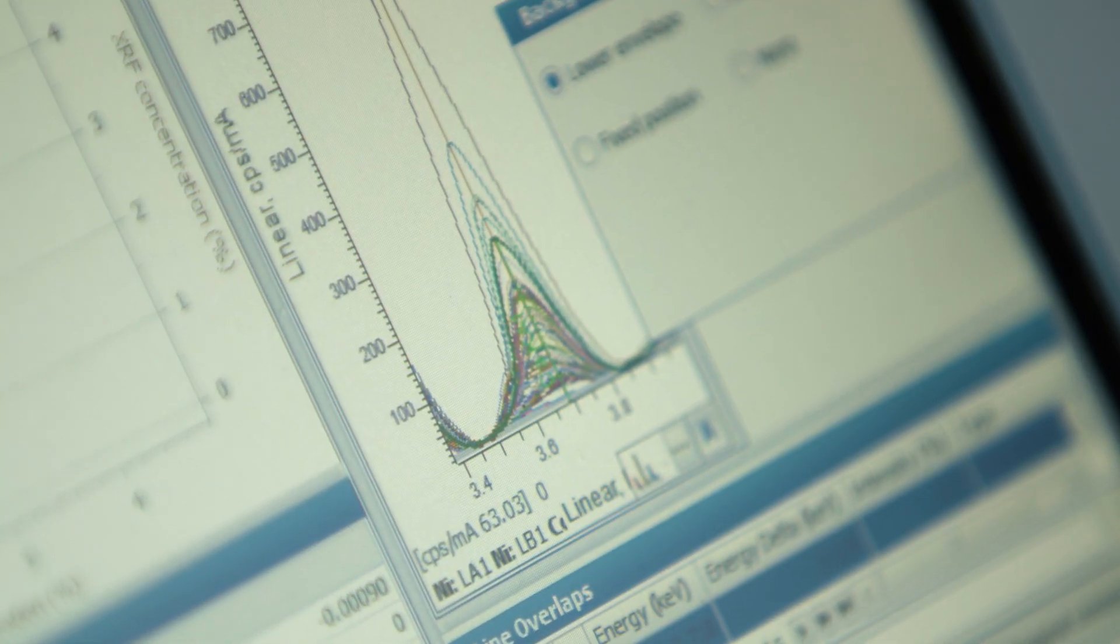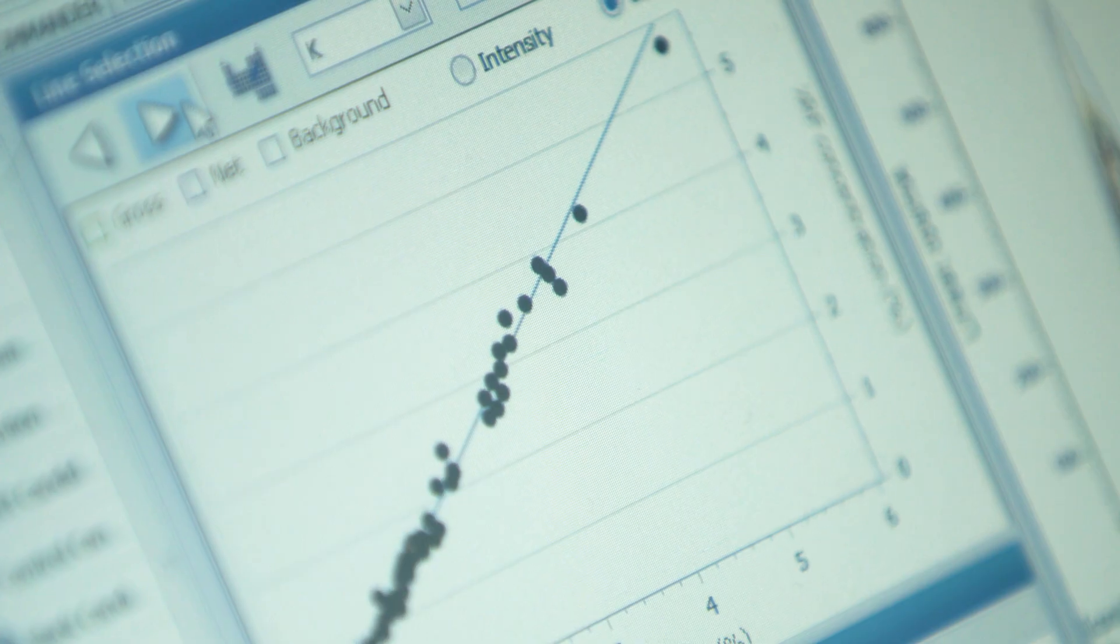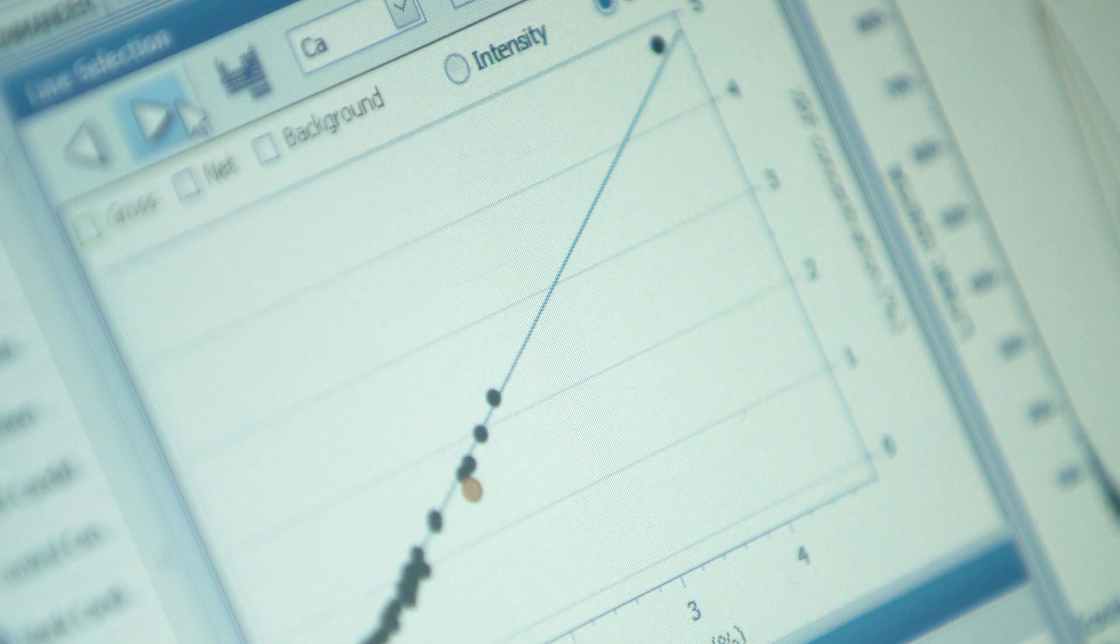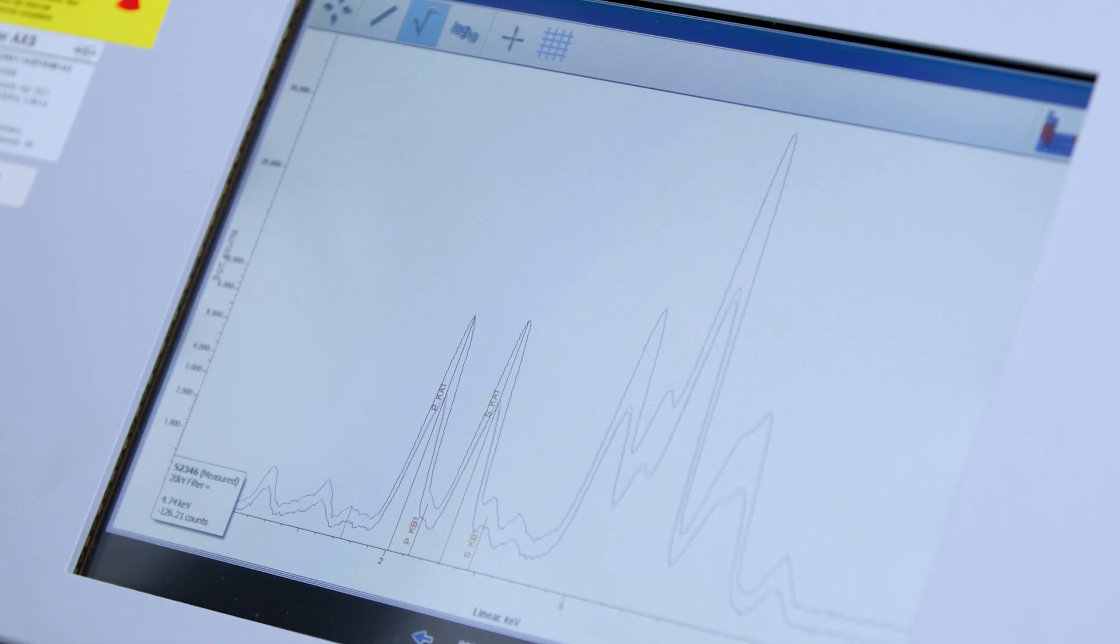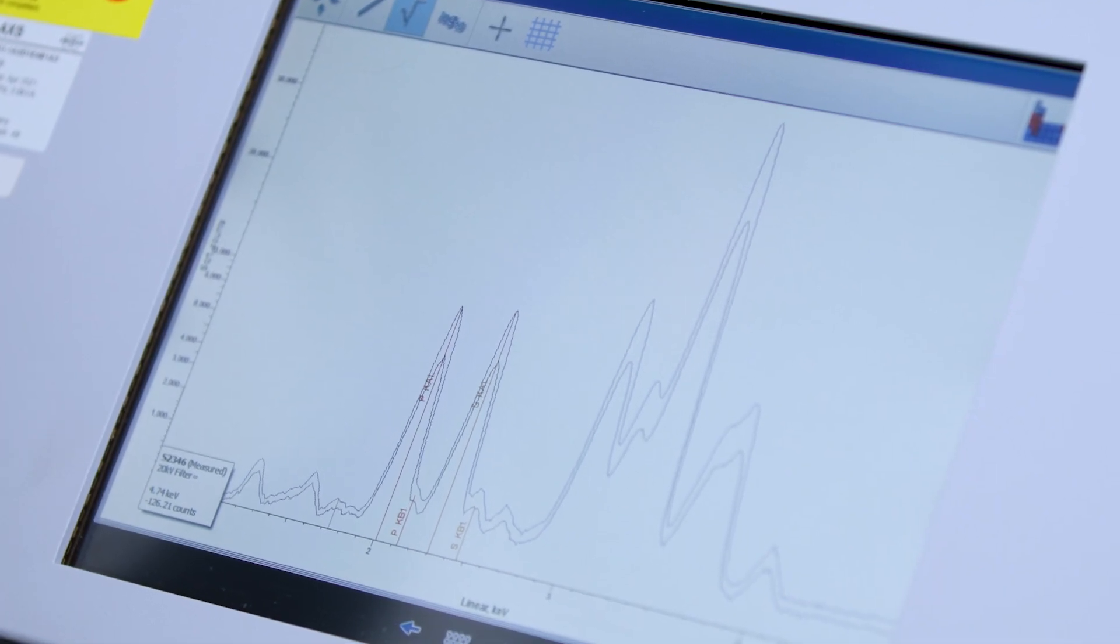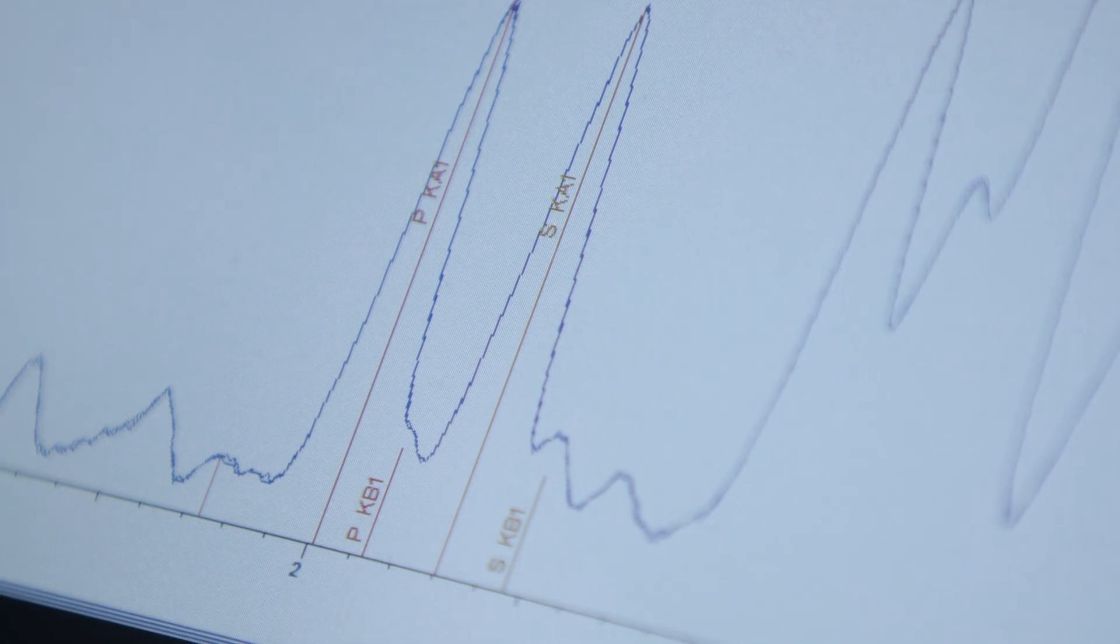Setting up a calibration is fast. It takes just a few hours. You compare detected characteristic radiation to known element concentrations in your standards. After that, analyzing a production sample against the calibration takes less than 10 minutes. A well-maintained calibration can be used for months or even years without recalibration.